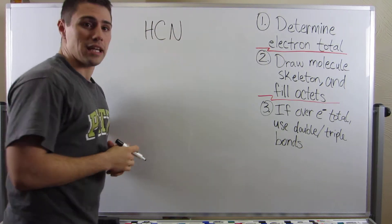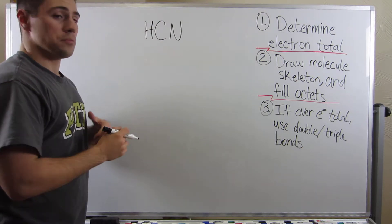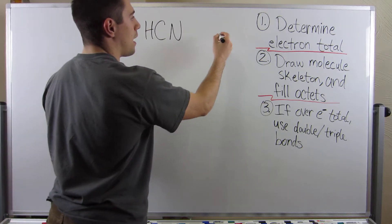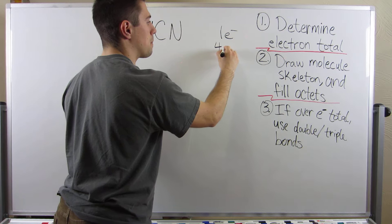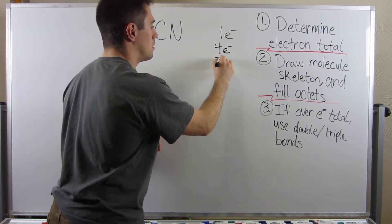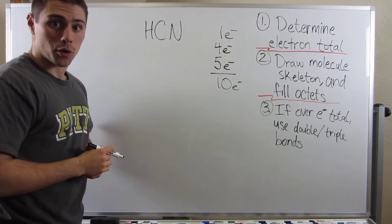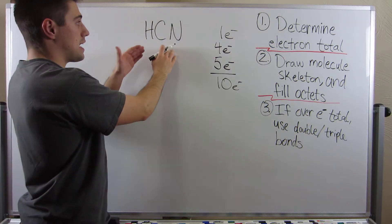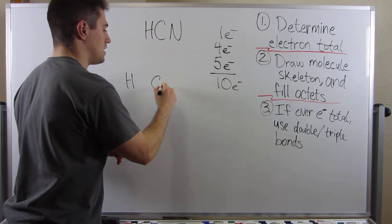Alright, this molecule HCN, called hydrocyanic acid, this is our next victim. Step number one, count our total number of electrons. One electron from hydrogen, four from carbon, and nitrogen is in the fifth column, so he brings five electrons to the table for a grand total of ten electrons.